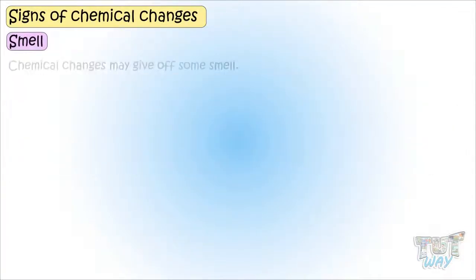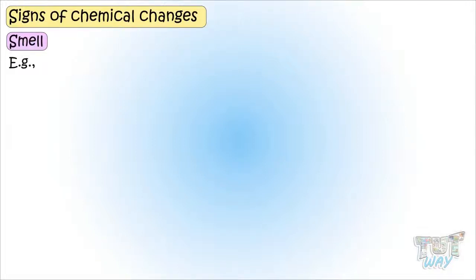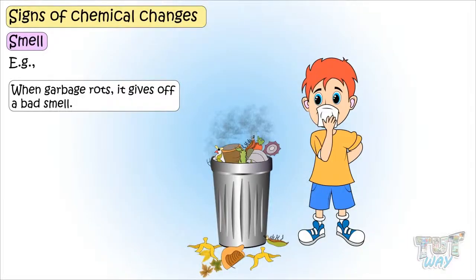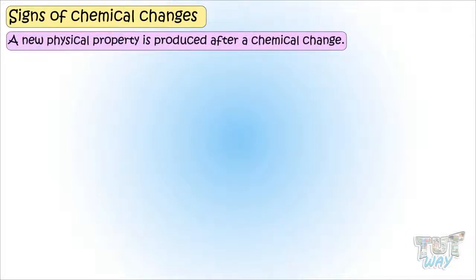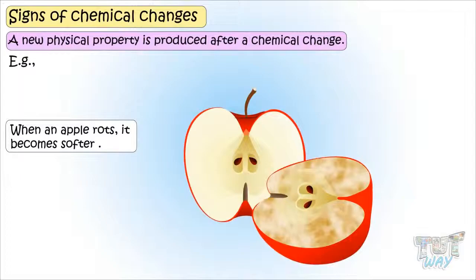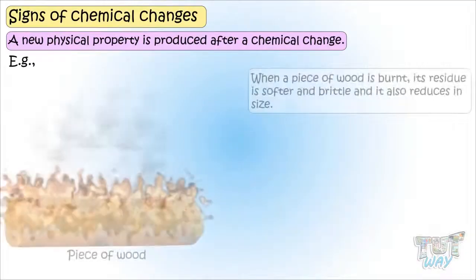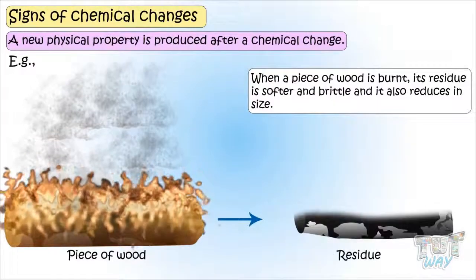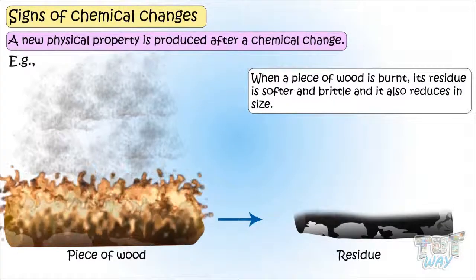Smell: chemical changes may give off some smell. For example, when garbage rots, it gives off a bad smell. A new physical property is produced after a chemical change. For example, when an apple rots, it becomes softer. When a piece of wood is burnt, its residue is softer and brittle and also reduces in size.